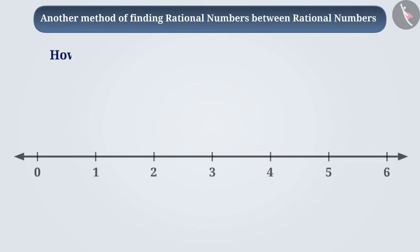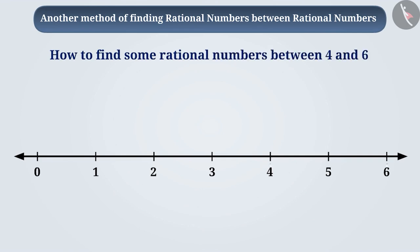Now let's look at another method of finding rational numbers between rational numbers. Suppose we have to find some rational numbers between 4 and 6. For this, we will add both rational numbers and divide the result by 2. From this, we get to know that the rational number in their middle is 5.